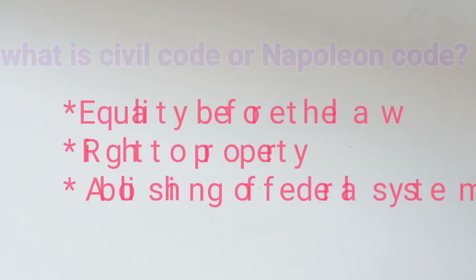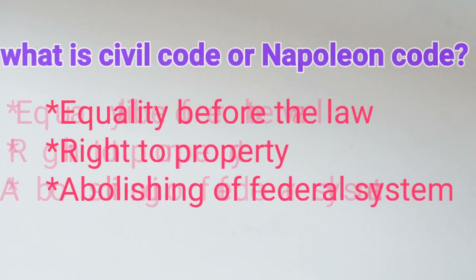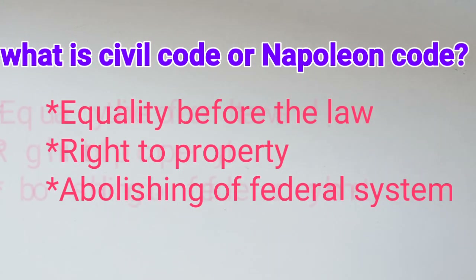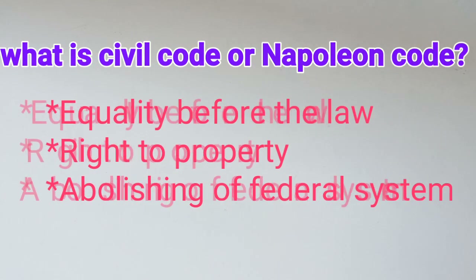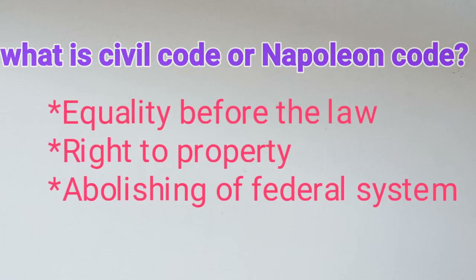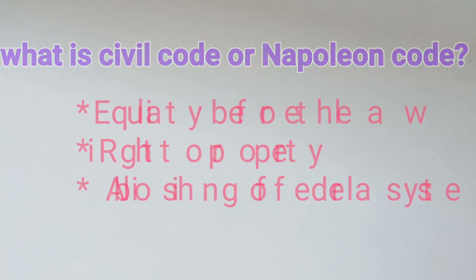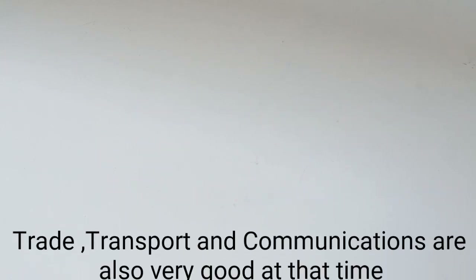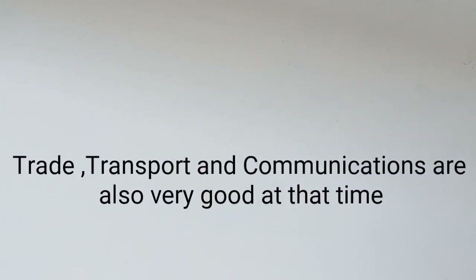These things in the Civil Code are very important. First, equality before the law. Second, right to property. And third, abolition of the feudal system. Trade, transport, and communication also became very good during Napoleon's period.